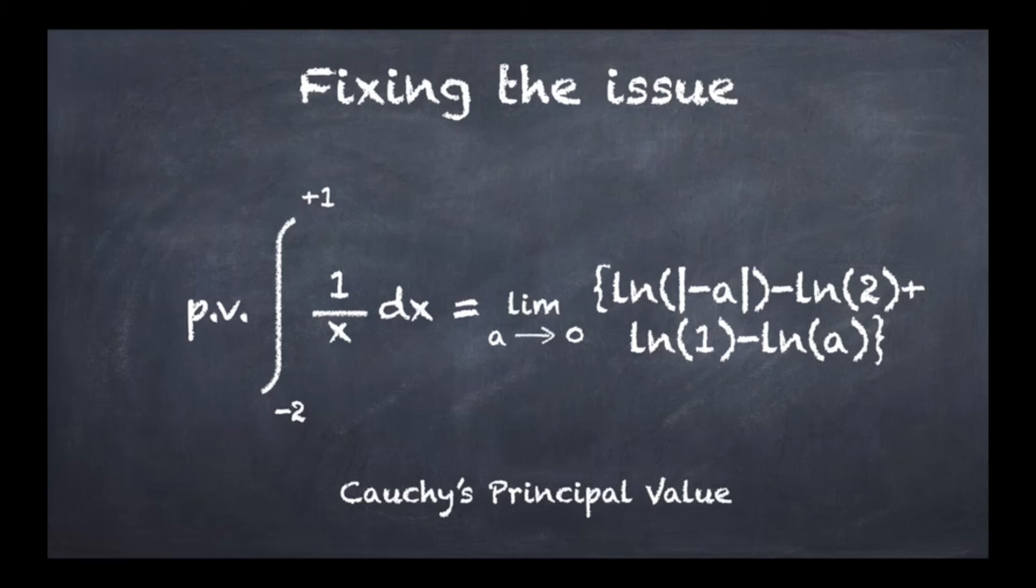Now you see that what happens is that these two logs disappear. They compensate each other. So essentially, they overshoot to infinity in one direction but then to minus infinity in the other, and these two contributions actually compensate to give rise to a finite value.